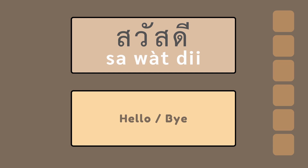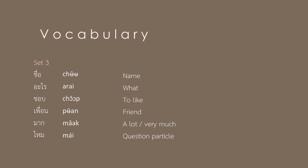And now, let's move on to the last set. ชื่อ — name. อะไร — what. ชอบ — to like. เพื่อน — friend. มาก — a lot, very much. ไหม — question particle.